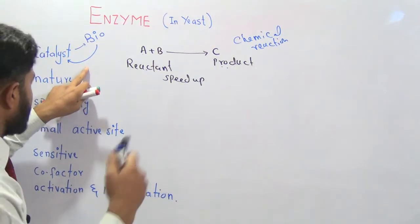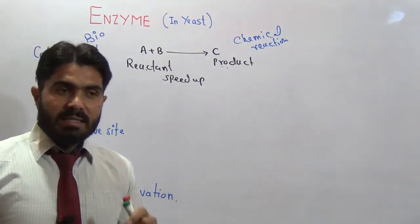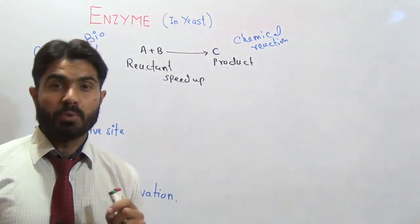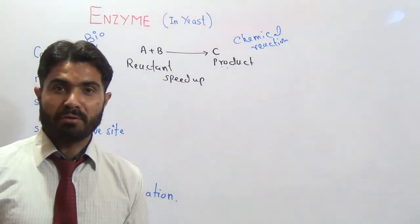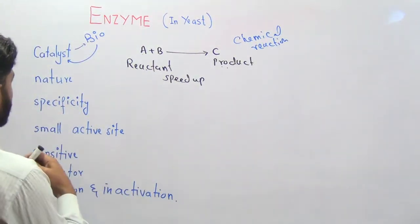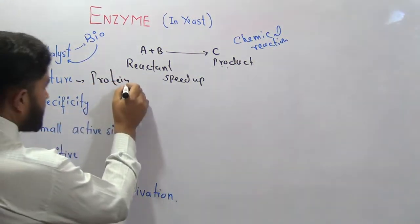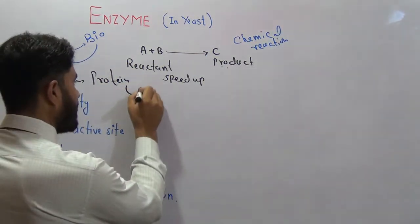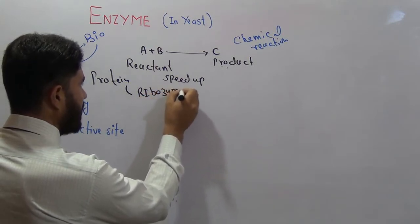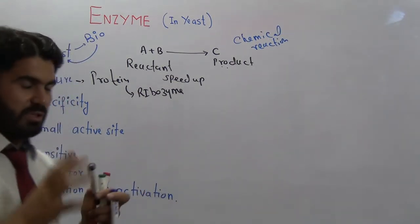That was just the introduction to enzyme. Now, the nature: enzymes are made of protein. The majority — you can say 99% — of enzymes are made of protein. Except one enzyme that is RNA in nature, which we call ribozyme. This is an exceptional case — it is an enzyme, but it is not protein in nature.